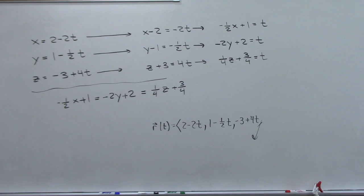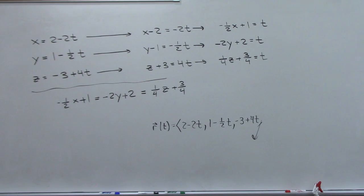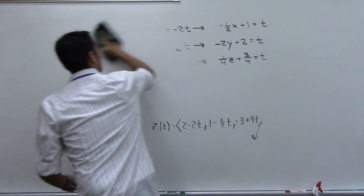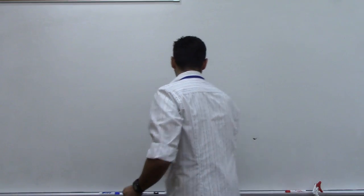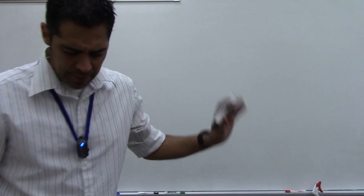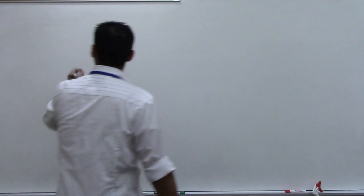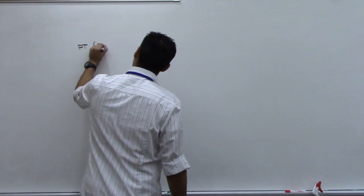My answer looks a little different from the book's answer but it's correct. Moving on to number eight — same instructions: find the parametric and symmetric equations of the line through the point (2, 1, 0).